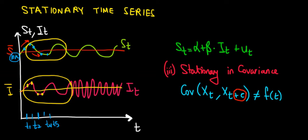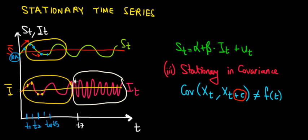But notice what happens in the second frame of the inventory graph. Here the covariance is no longer positive — it becomes negative. In period 7 the value is above the average, but just one period later in period 8 it is below the average. That's the exact opposite — a negative correlation. If this one is high, the next one is low; if this one is low, the next in period 9 is high again. High, low, high, low — that's a negative covariance.